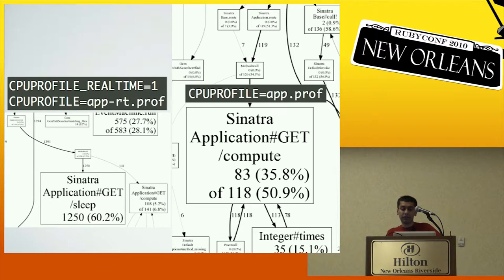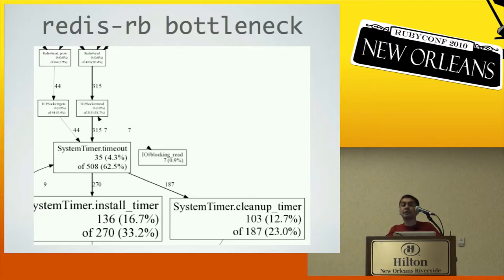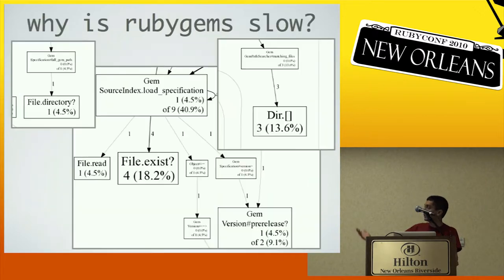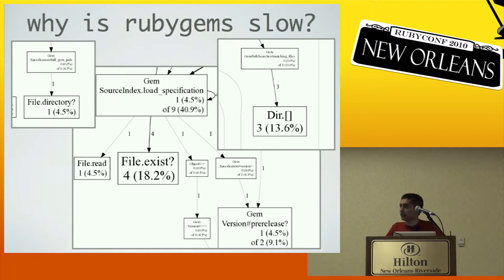Early versions of the Redis gem used SystemTimer on every single read and write, and running PerfTools on that we saw a lot of overhead. Once we knew that was the issue, we switched to using native TCP timeouts on reads and writes. Another use is to get a sense of a codebase — since it shows the entire call graph, you can see what functions are called, how often, and what they call. For instance, you can see RubyGems spends a lot of its time in file system access: traversing directories, checking if files exist, opening gem specs.